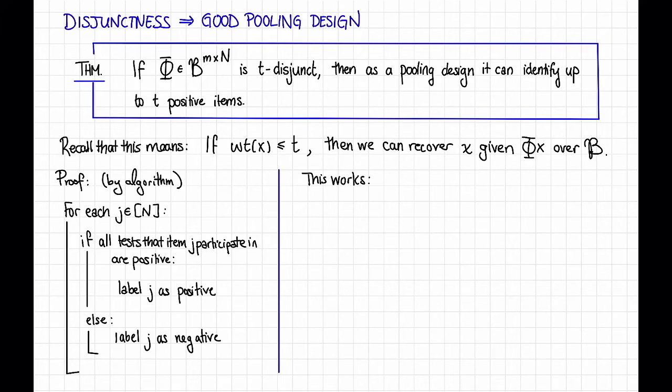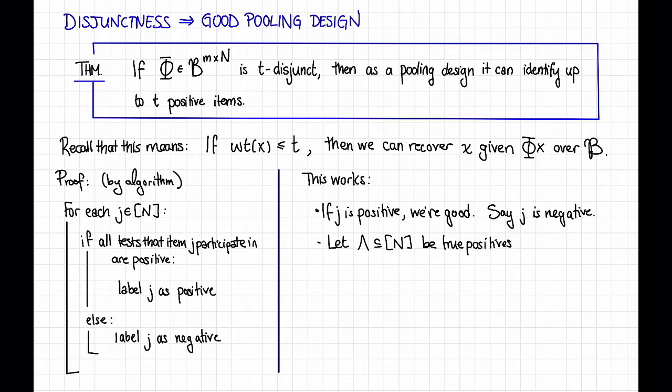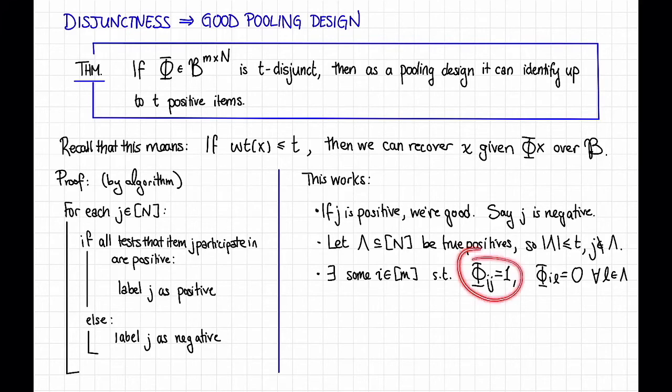So first, if j is actually positive, that is, if person j was actually sick, then obviously the algorithm is going to say that they are positive. So let's assume that j is negative. In that case, let's let λ be the true set of positives. So the size of λ is at most t, and j is not in λ. Now, by the definition of disjunctness, remember, we're assuming that φ is t-disjunct, there exists some row i in m such that φ_ij is equal to 1 and φ_il is equal to 0 for all l in λ.